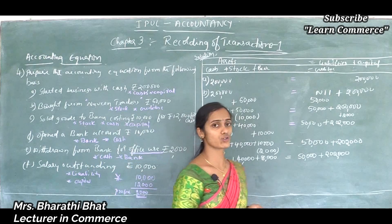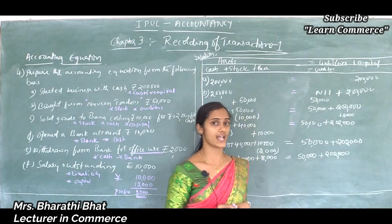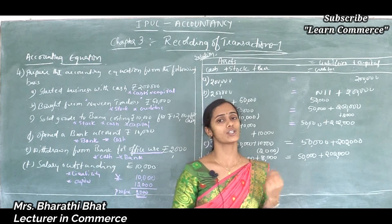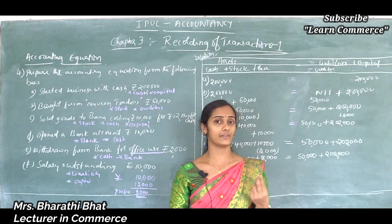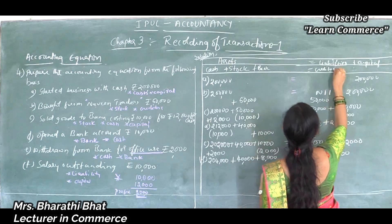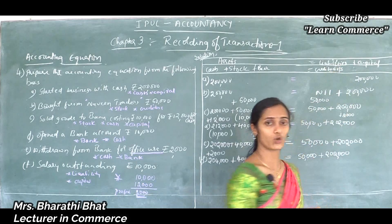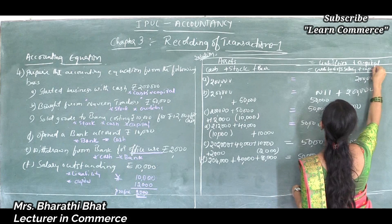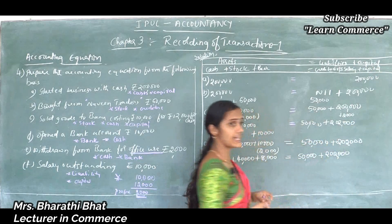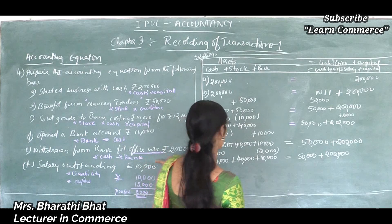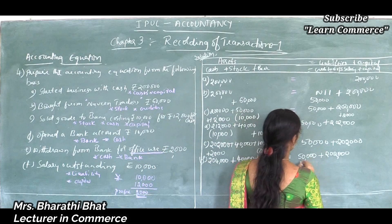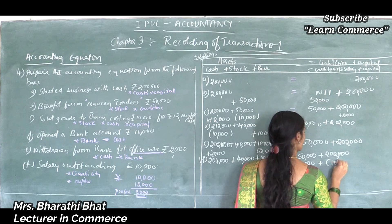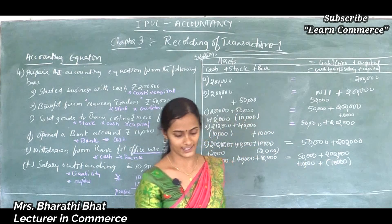Salary outstanding. Outstanding means salary not yet paid — previous month salary unpaid. That is considered as a liability for the business organization. So we record it as outstanding salary of 10,000. Liability increases and at the same time capital decreases.